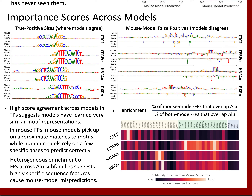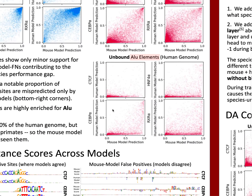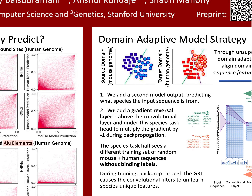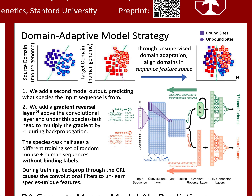Next, we investigated a potential solution to this problem called domain adaptation, where we consider the mouse and human genomes different domains that need to be aligned within our model's learned sequence feature embedding space in order for models to transfer well across species. Specifically, we adopted a gradient reversal layer strategy that uses a modified architecture and training scheme. The goal is to discourage the model from learning any species-specific sequence features while it is learning TF binding patterns during training. Notably, this strategy does not require the binding labels of the test species during training, so this is a form of unsupervised domain adaptation.